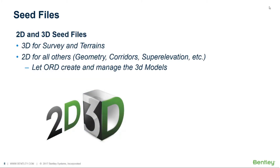Finally, regarding 2D versus 3D: use 3D for survey and terrains, and use 2D for everything else — geometry, corridor, superelevation, whatever the case may be. Those 2D files will obviously create 3D models. Just let ORD create and manage the 3D models; that'll be the most efficient way to handle your project data.